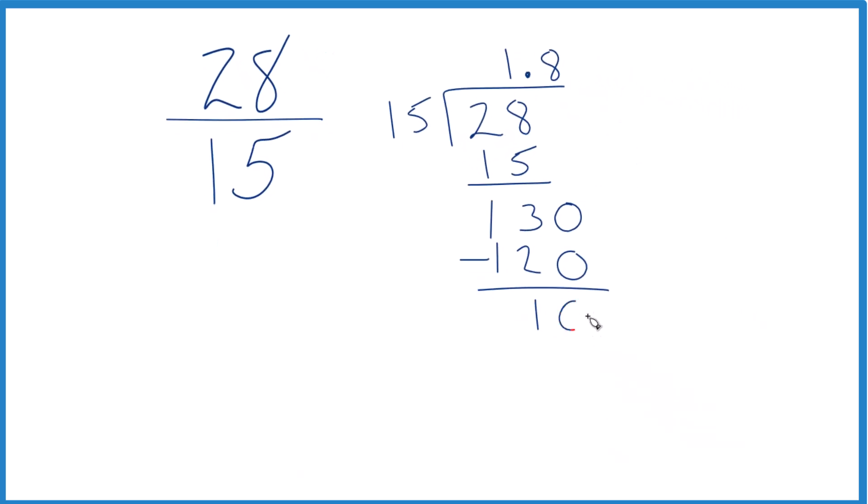Subtract, we get 10. It doesn't go into 10, but we can call this 100 if we move over 1. So now 6 times 15 is 90. So that's pretty close. Subtract, and we get 10.